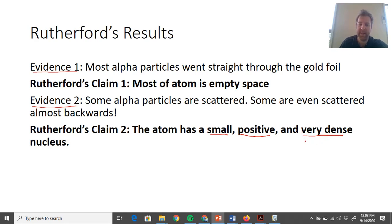Very dense because occasionally an alpha particle is scattered all the way backwards, which would only happen if it hit something very small and very concentrated with positive charge. He called this the nucleus.